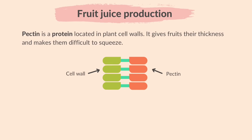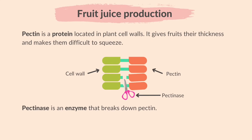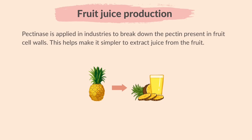Fruit Juice Production: Pectin is a protein located in plant cell walls. It gives fruits their thickness and makes them difficult to squeeze. Pectinase is an enzyme that breaks down pectin. The pectinase breaks down the pectin from the cell walls. Pectinase is applied in industries to break down the pectin present in fruit cell walls, which helps make it simpler to extract juice from the fruit.